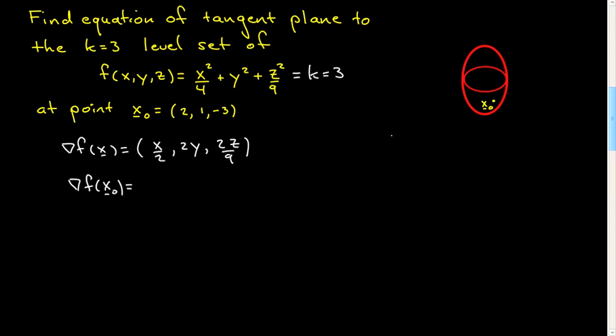We can evaluate that at x naught. x naught is 2, 2 over 2 is 1. 1, 2 times 1 is 2. Minus 3, that's minus 2/3. Just to make contact with the discussion of lines and planes, this is our normal vector now. In that discussion, I gave it coordinates a, b, c. I won't need this particularly, but I just want to relate that back.